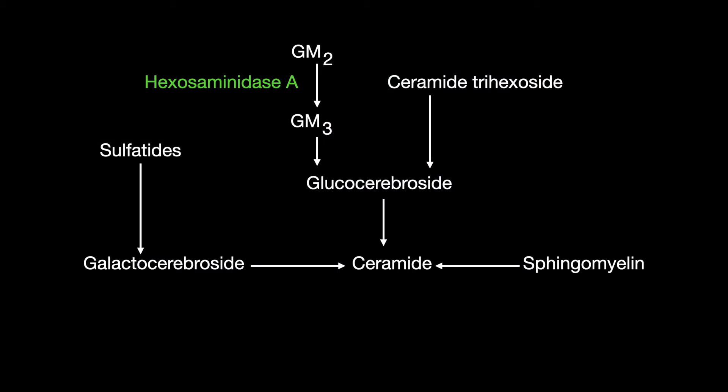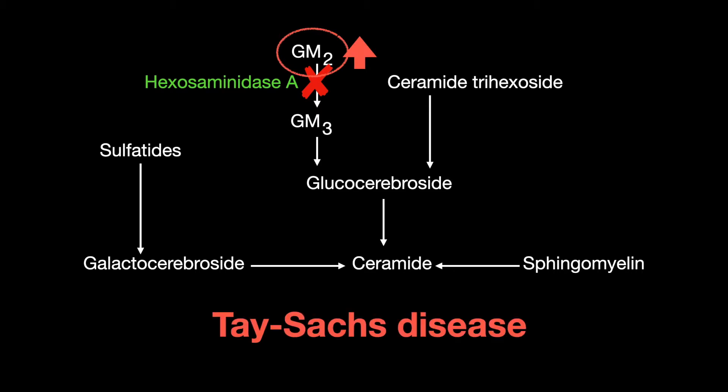Hexosaminidase A converts GM2 to GM3, and a deficiency of this enzyme results in a buildup of GM2. This is known as Tay-Sachs disease.